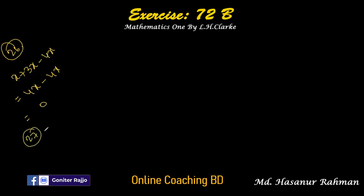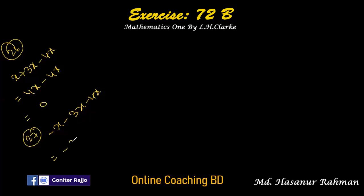Number 27 says minus x minus 3x minus 4x. All signs here are negative, so we add x, 3x, and 4x: 4 plus 3 is 7, plus 1 is 8. Answer is minus 8x.